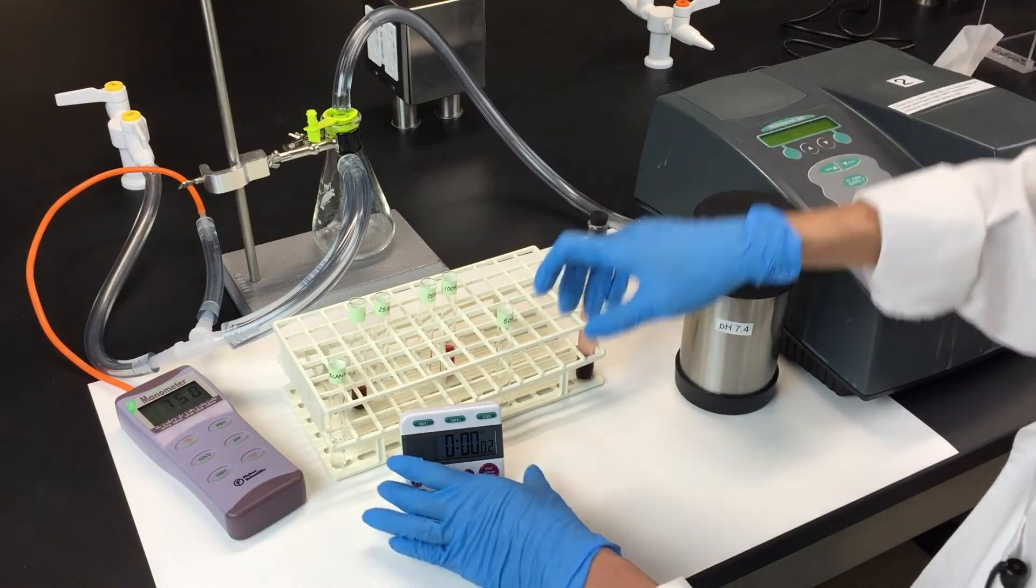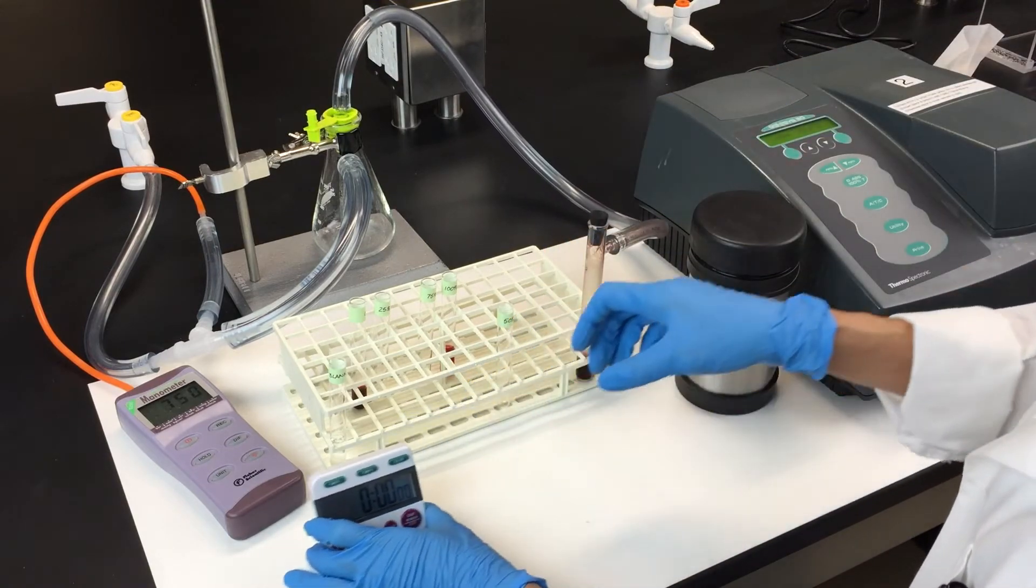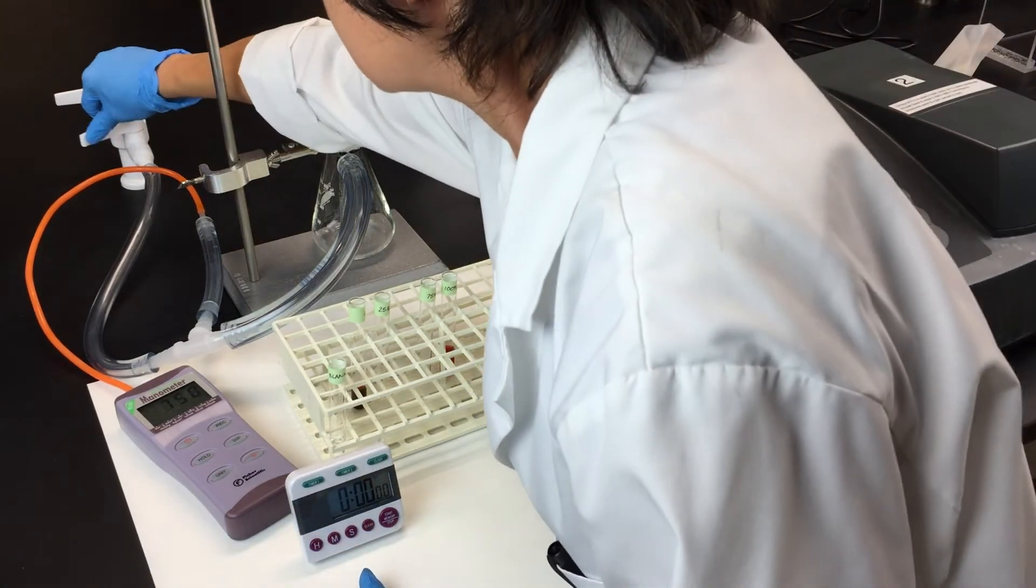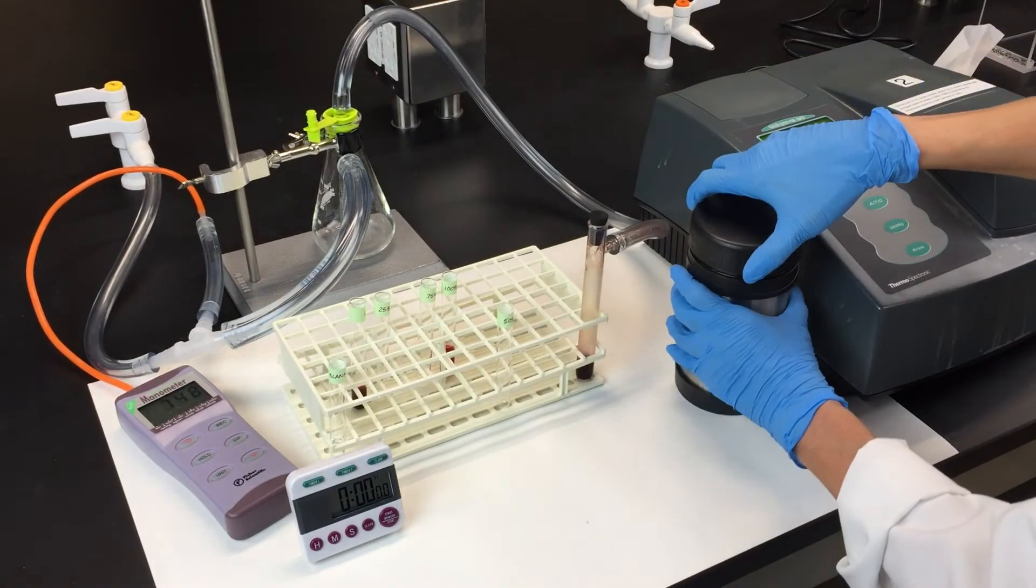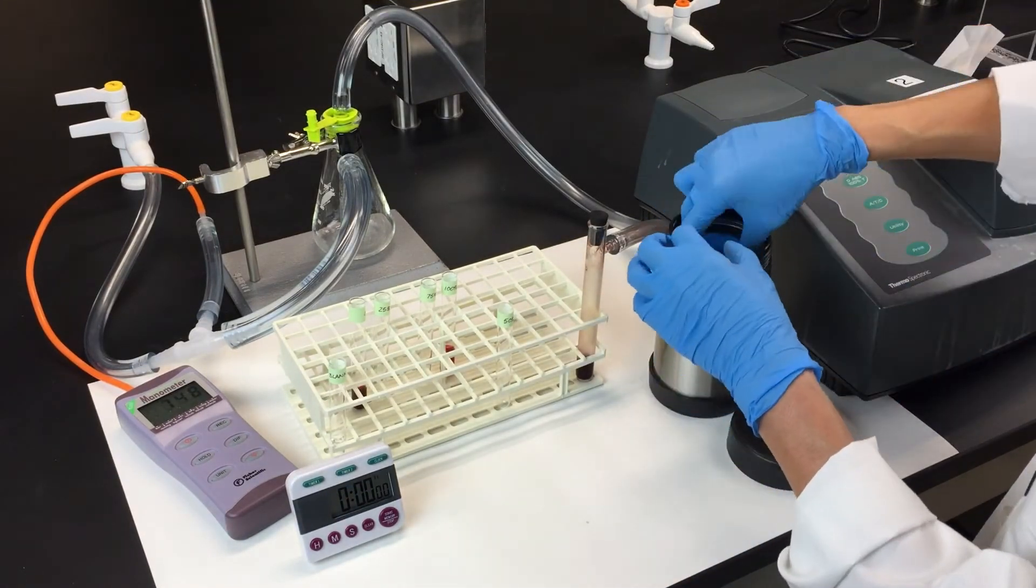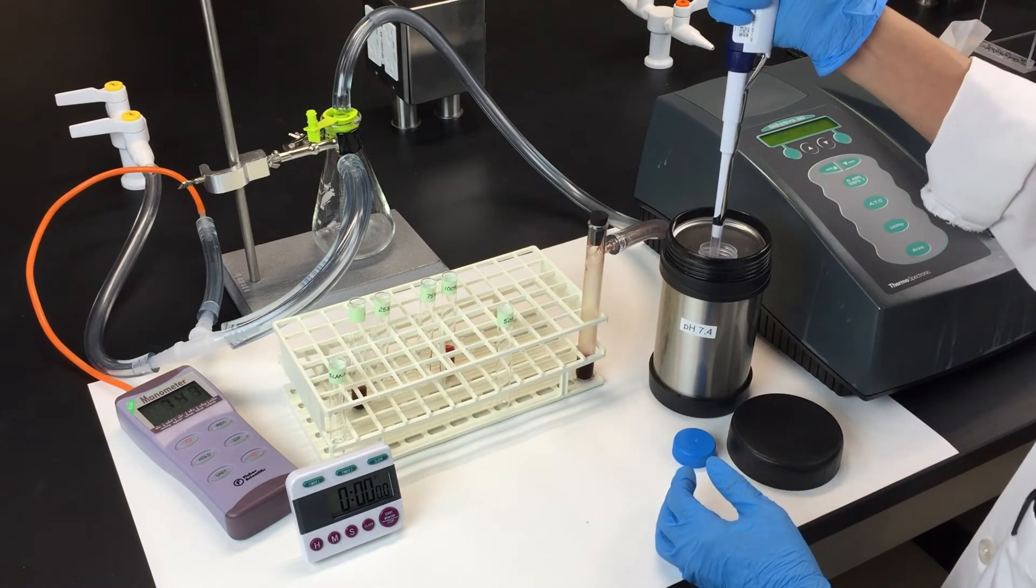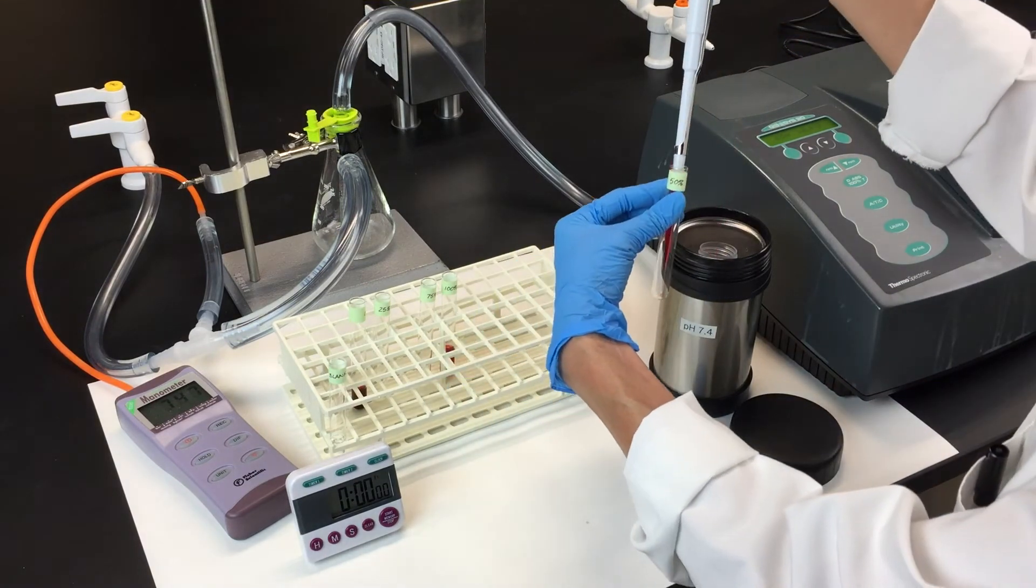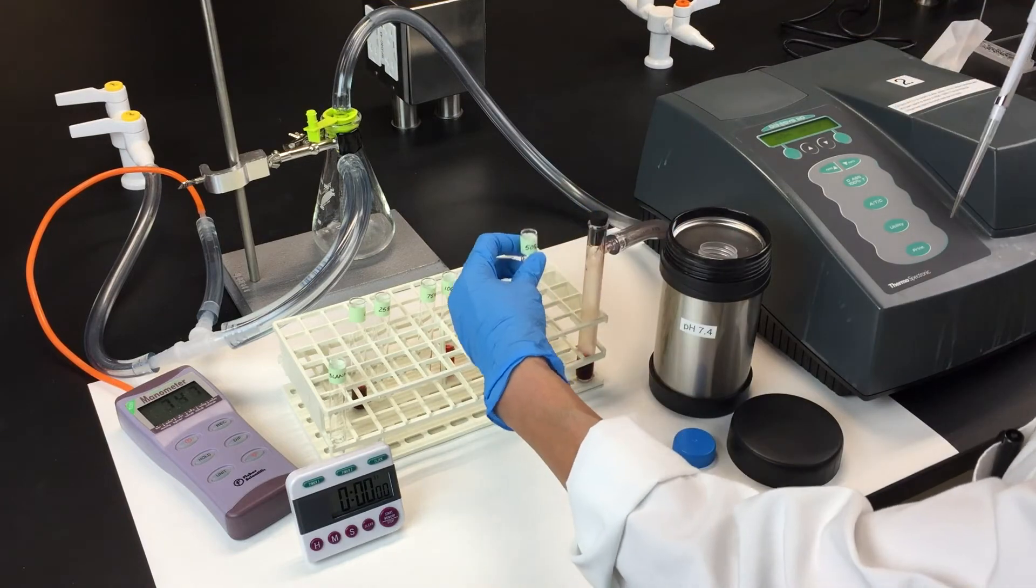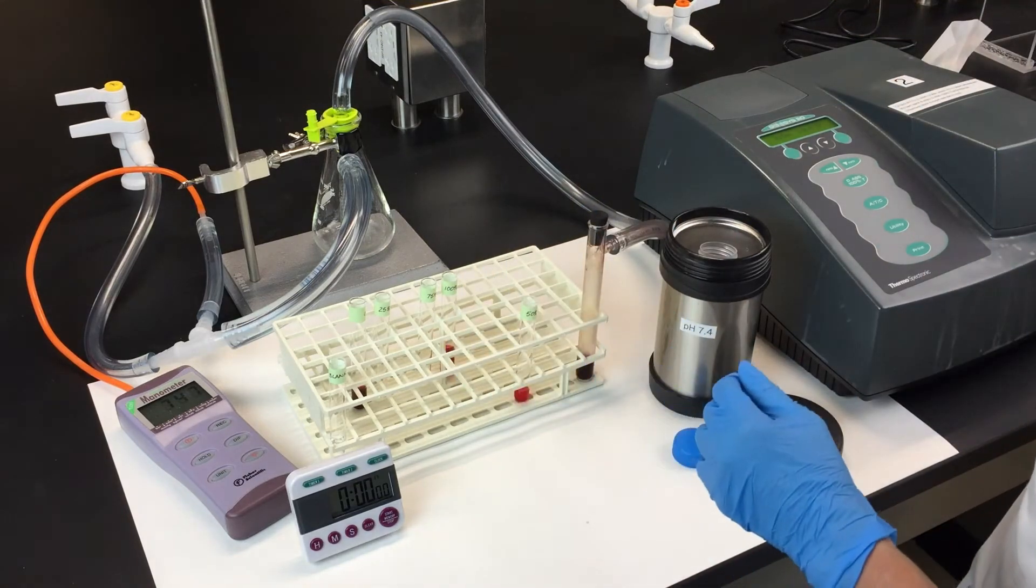When the hemolysate sample is fully deoxygenated, get ready to set up the 50% oxygenation tube. Transfer one milliliter of the fresh hemolysate to the 50% oxygenation tube. This part has to be done very accurately, so we'll use our micropipetters for this.